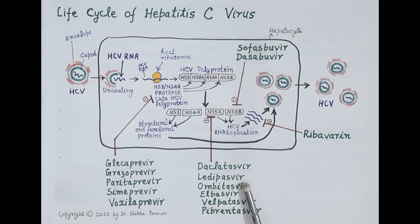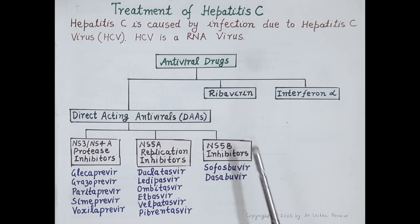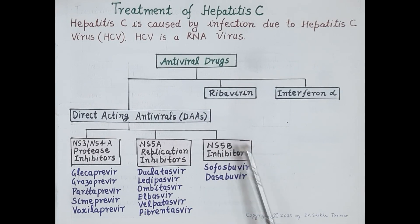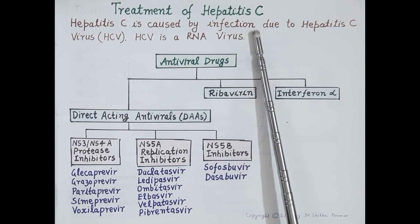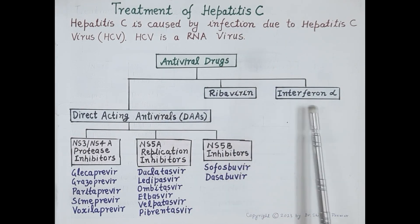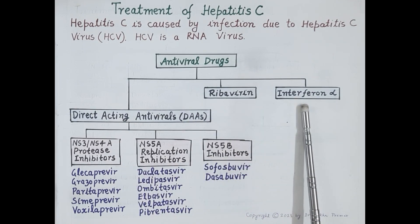In addition to these direct-acting antivirals, ribavirin and interferon alpha are also used for the treatment of hepatitis C. There are three main categories of drugs: direct-acting antivirals, ribavirin, and interferon alpha.